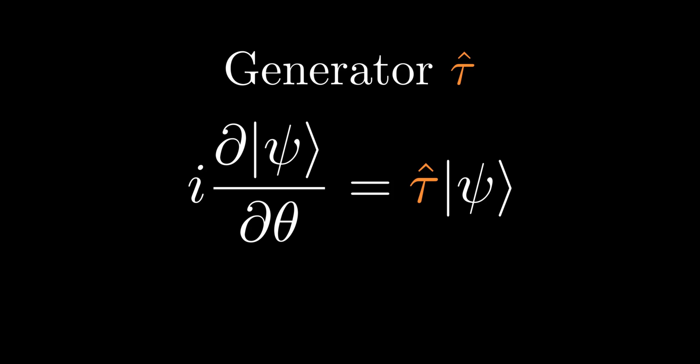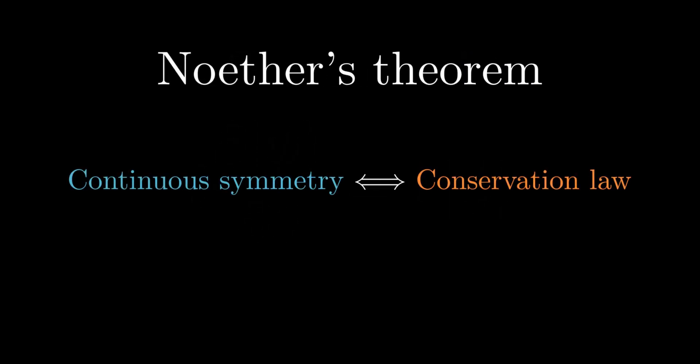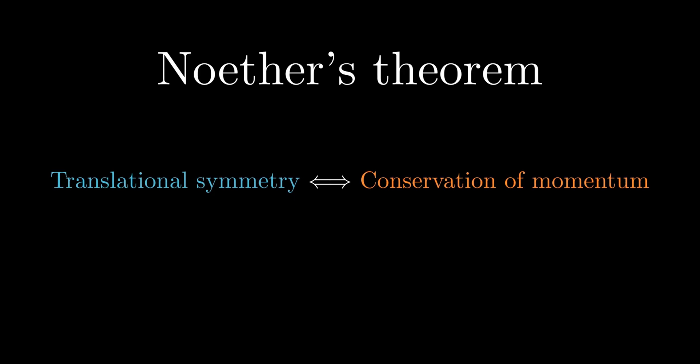The Hermitian operator tau gives the rate of change with respect to the parameter theta. There is a deep connection between conservation laws and continuous symmetry, as stated in Noether's theorem, which says for every continuous symmetry we can associate a conservation law. Newton's first law states that, provided there is no external force, momentum is conserved under translation. Thus we associate momentum conservation with translational symmetry and define momentum as the generator of translation. We will justify this choice further in chapter 5.